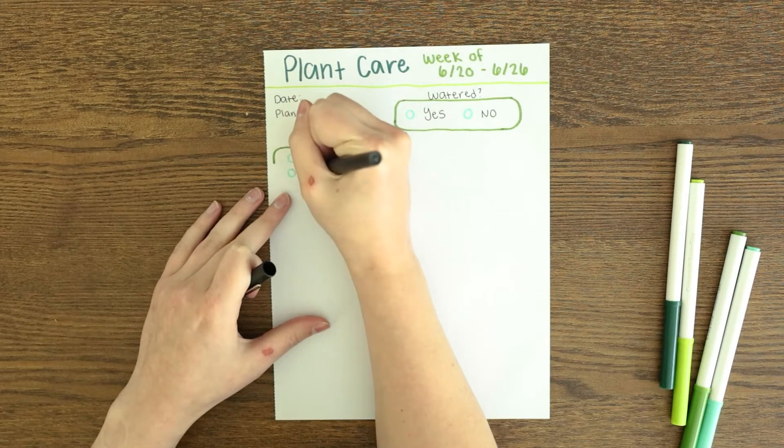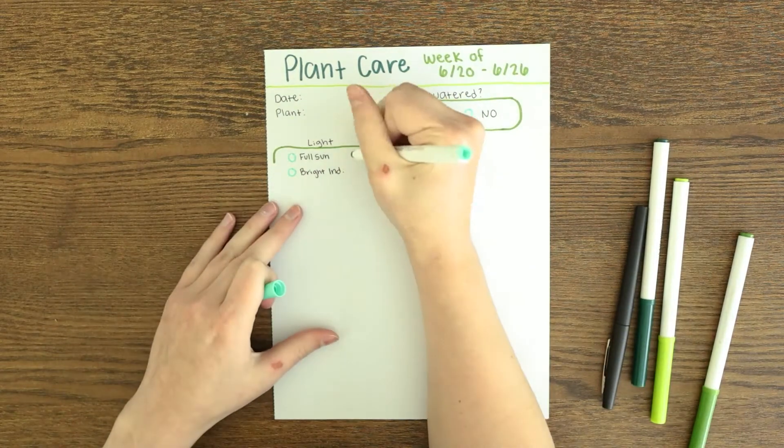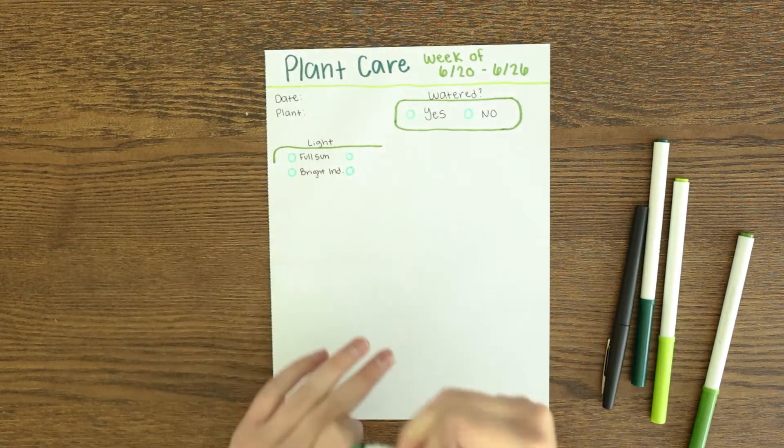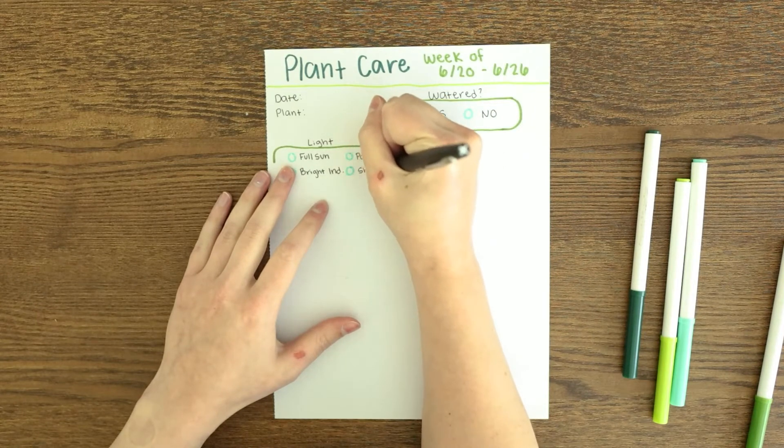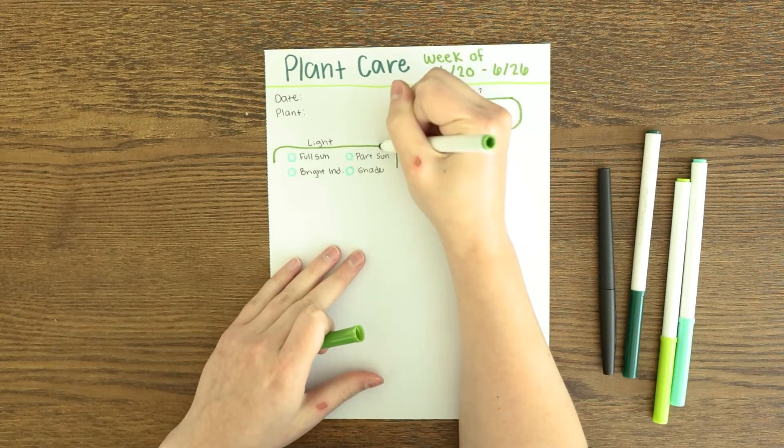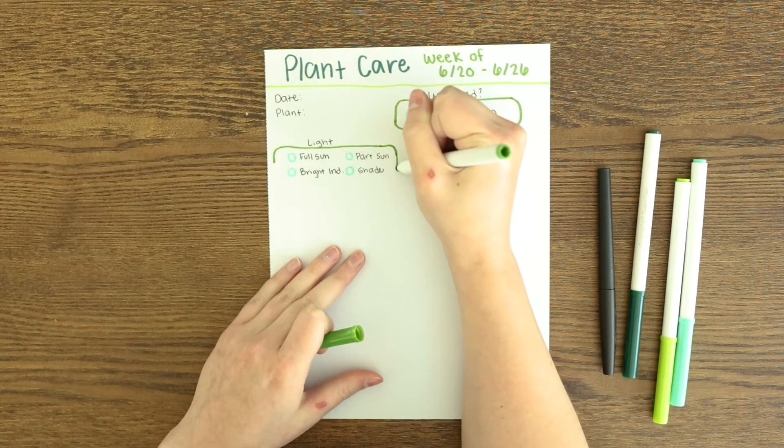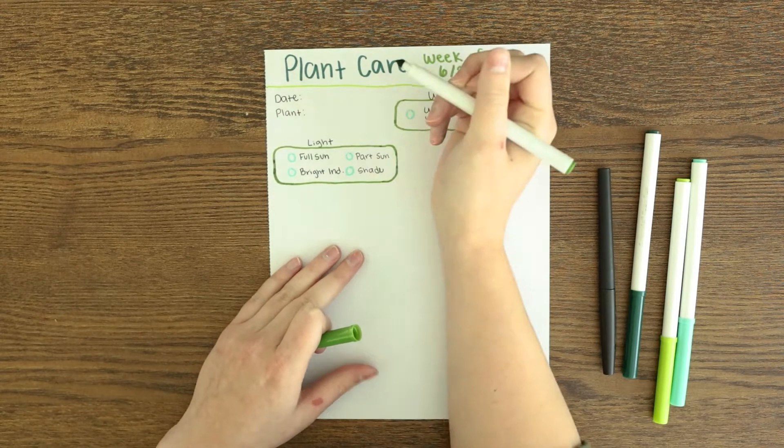The top of the paper says 'watered' and I just put a yes or no. That's just if I watered that plant that day, just so I know and I can always look back to see when the last time I watered that plant was.